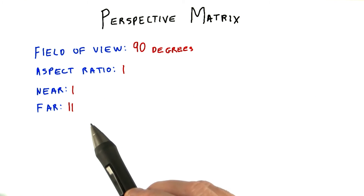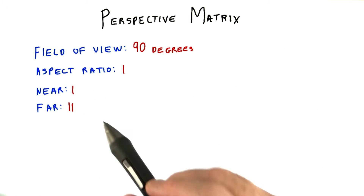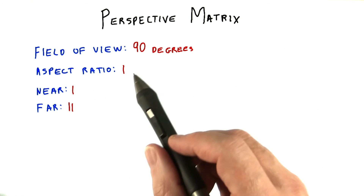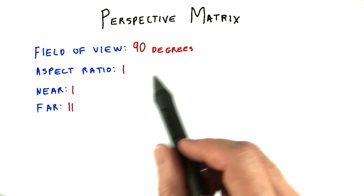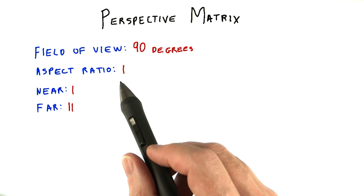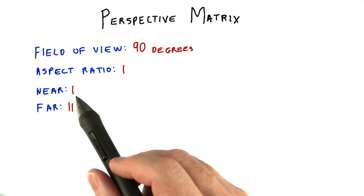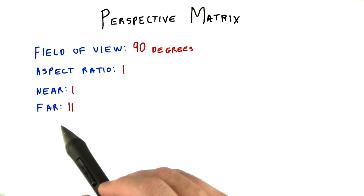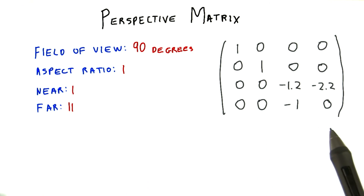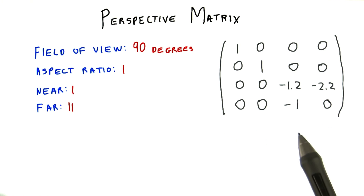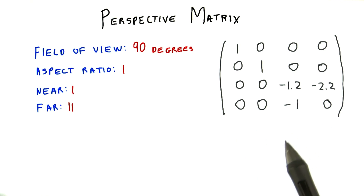The interesting thing is how this perspective matrix works with coordinates. Let's take a nice simple case: field of view 90 degrees, aspect ratio of 1, near 1, and far 11. This gives us this matrix. Let's use this matrix on some test points and see what we get.